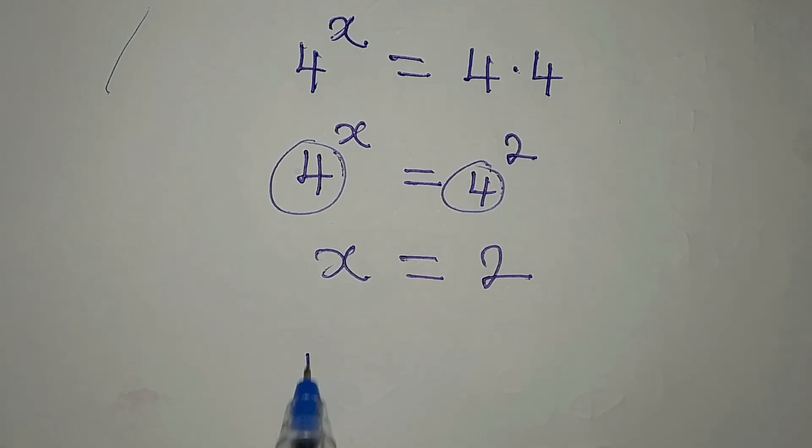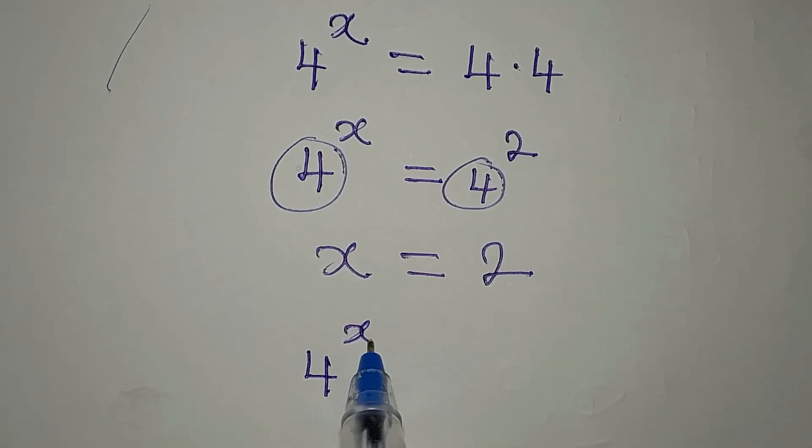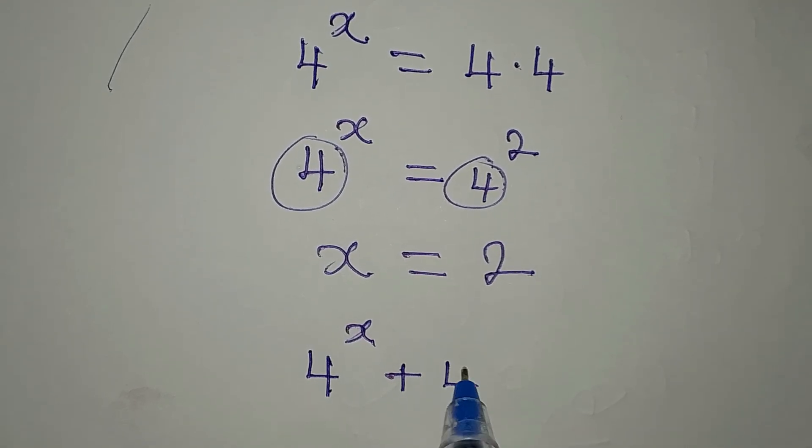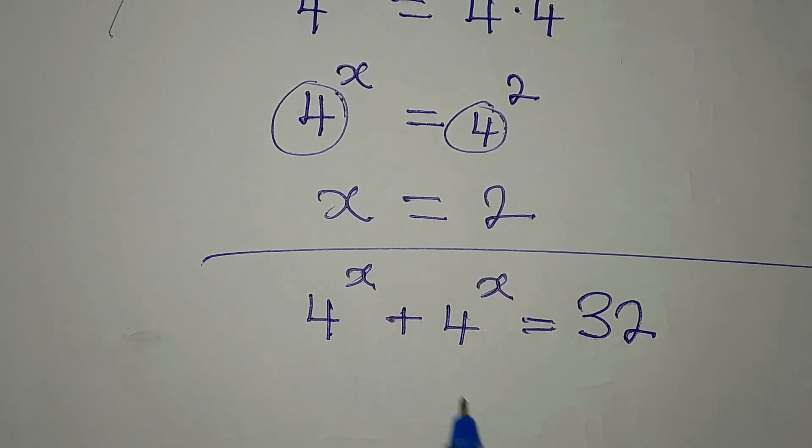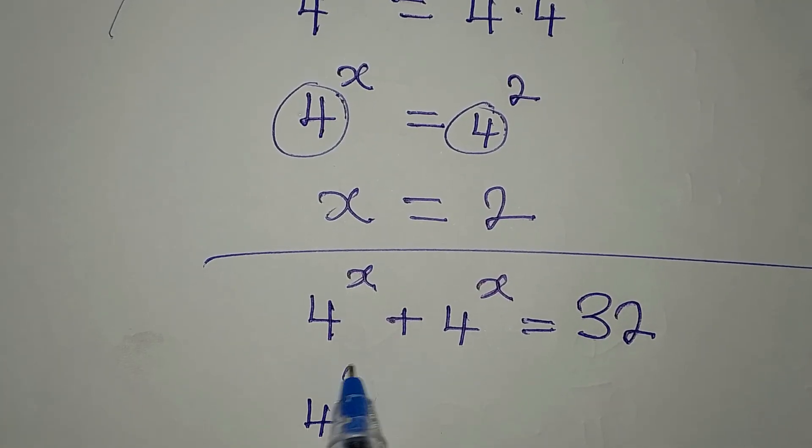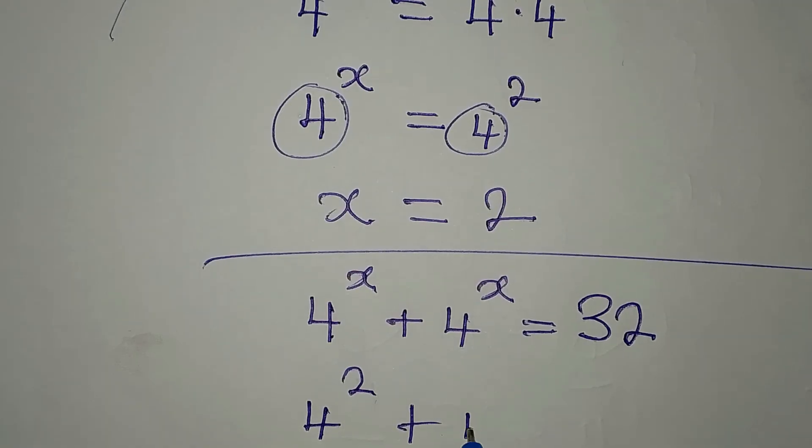And if you go back to the equation, which is 4 to the power of x plus 4 to the power of x equals 32. Now, in place of x, what should I put? 2, right. So that means I have 4 squared plus 4 squared.